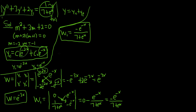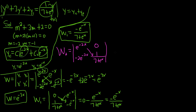Now we find W2. For W2, we keep the first column of the Wronskian — e to the negative 2x and negative 2e to the negative 2x — and replace the second column with 0 and f of x, so 0 and 1 over 7 plus e to the x. This times this gives e to the negative 2x over 7 plus e to the x minus 0. So W2 equals e to the negative 2x over 7 plus e to the x.